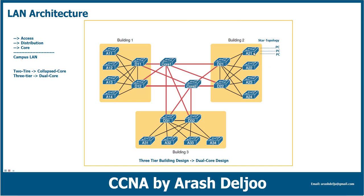Between the access layer switch and the distribution layer, we use a different topology. Here, switch one is connected to two distribution switches for redundancy and load sharing — if one link fails, we can use the other. As you can see, between the access layer switch and distribution layer switch we are using partial mesh, not full mesh. There is no direct connectivity between two access layer switches.